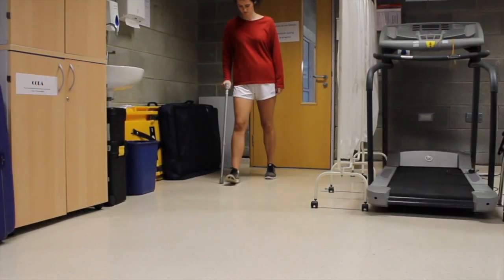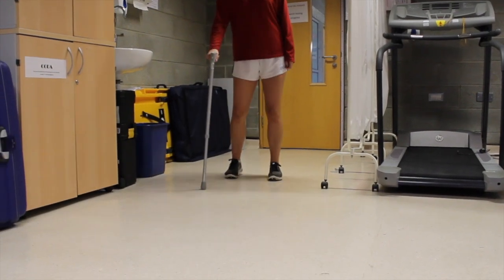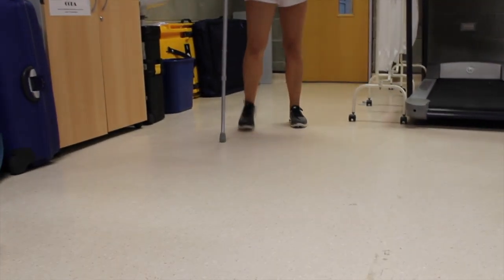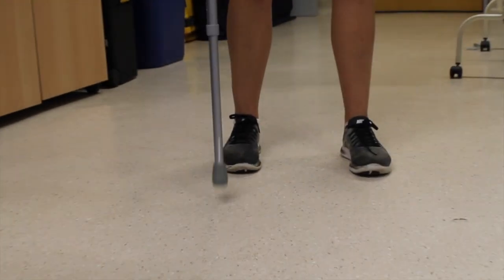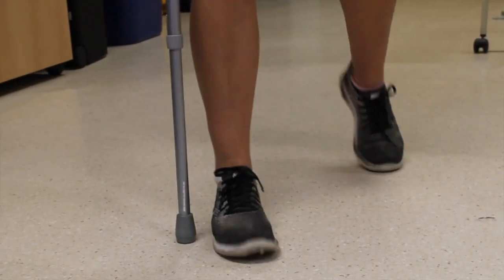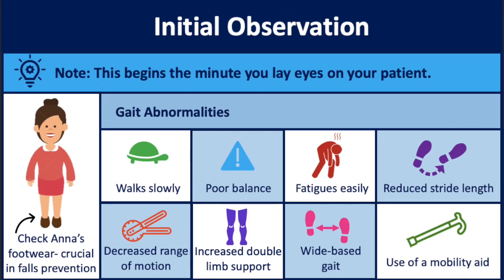Initial observation: the objective assessment begins as soon as you lay eyes on the patient. As Anna enters, we can clearly see gait abnormalities. Anna walks slowly and steadily and appears to fatigue easily. Other signs you may encounter include reduced speed and step length, reduced range of motion of the leg joints, increased double limb support, and reduced stability.